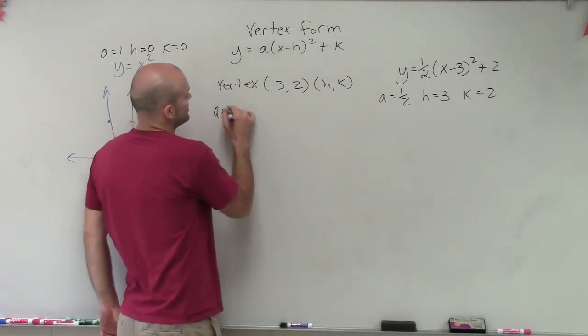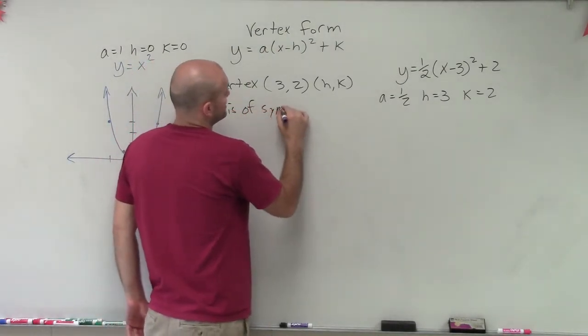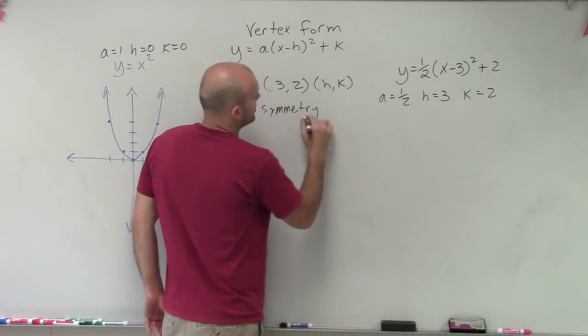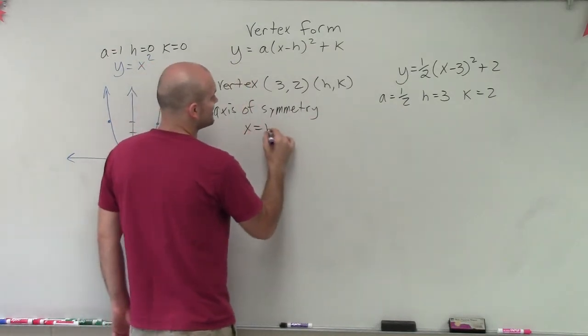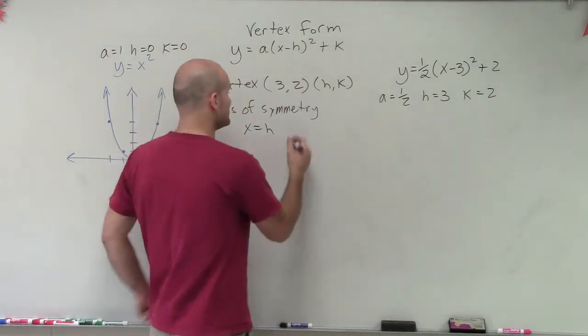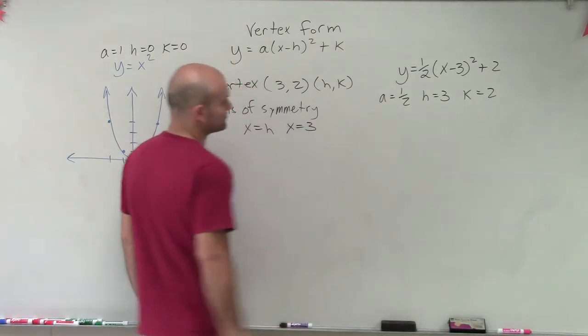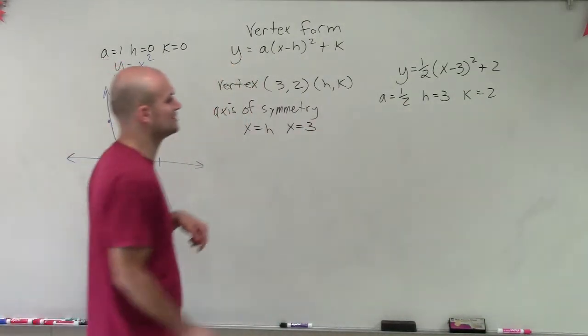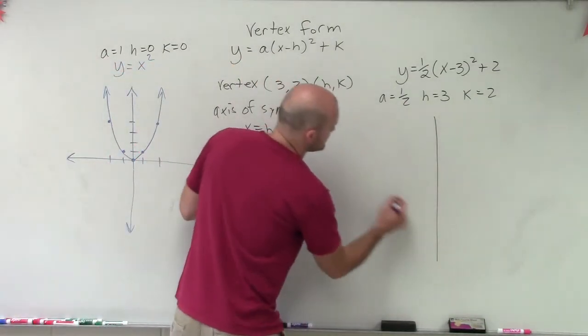Then our axis of symmetry, which I'm really getting sick of writing every single time. But our axis of symmetry is going to be x equals h, which in this case is 3. So x equals 3. And when we graph this, you'll be able to see that. So let's actually graph our axis of symmetry and our vertex.